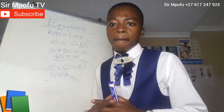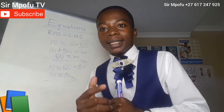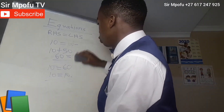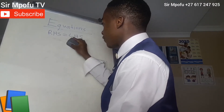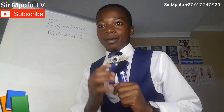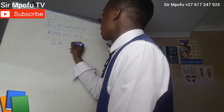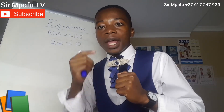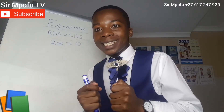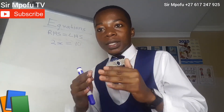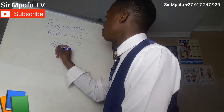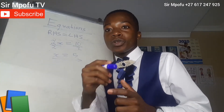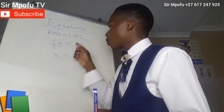Now I want to show you how you solve it if your coefficient is not 1. For instance, let's say we have 2x equals 10. If you are solving equations and your coefficient is not 1, divide both sides by the coefficient. Here our coefficient is 2, so we divide by 2 on both sides. Our final answer: x equals 5. Remember, 2x is the same as 2 times x. To prove: 2 times 5 is 10 — proved.